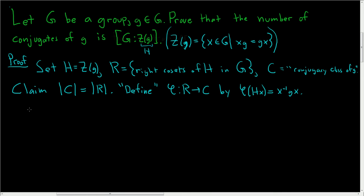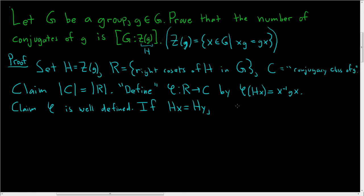First we have to show phi is actually a function — in other words, if the inputs are the same and we apply phi, do we get the same result? Claim: phi is well-defined. In other words, if we have two cosets that are equal — if Hx = Hy — we want x⁻¹gx to equal y⁻¹gy. So if the inputs are the same, the outputs must also be the same.